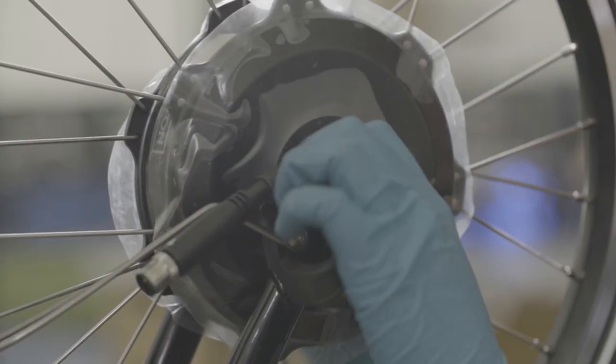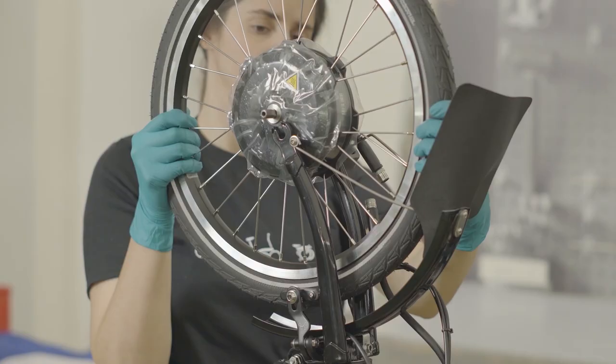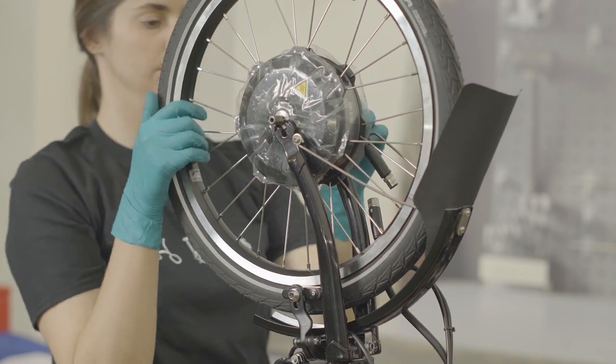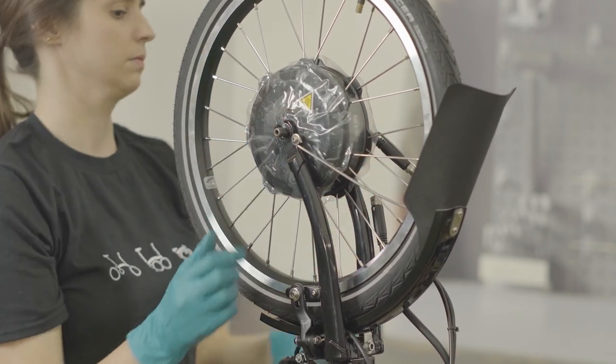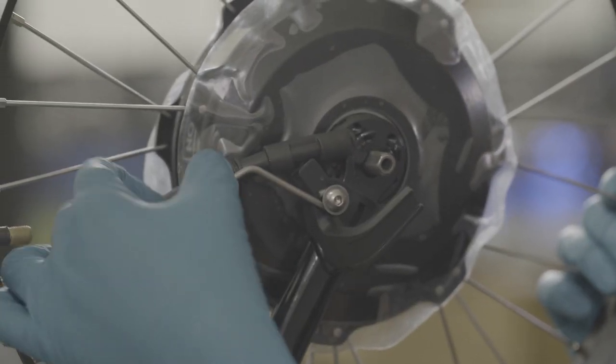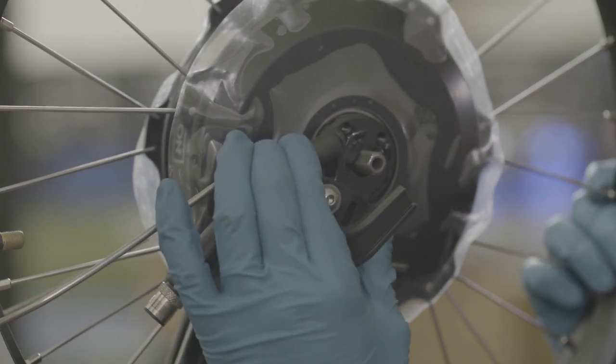As you lower the wheel, take care with the motor cable. Push the axle into the dropouts and make sure both sides are fully inserted. Then place the cable into the cable slot of the plastic hook.